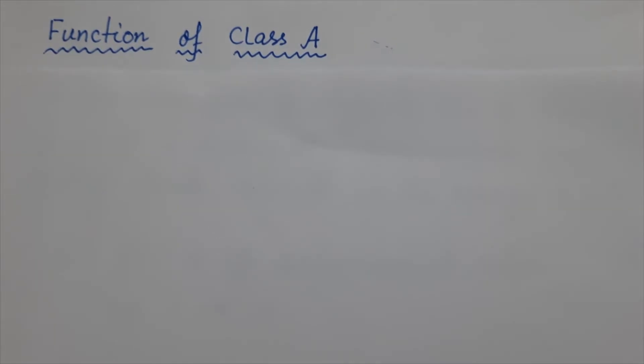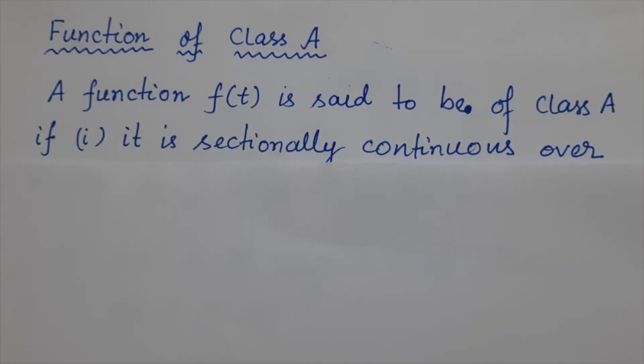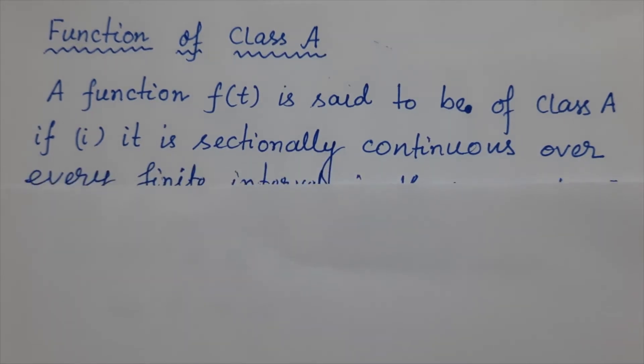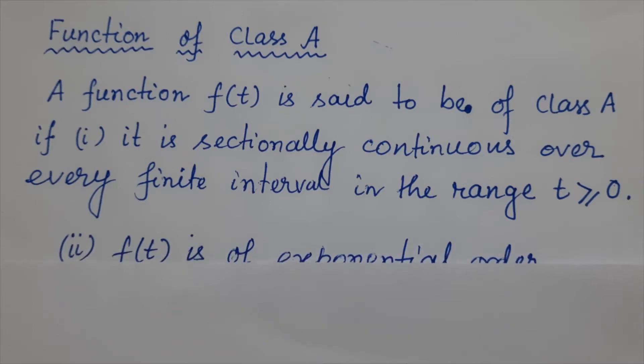Now let's see function of class A. A function f(t) is said to be of class A if: 1. It is sectionally continuous over every finite interval in the range t greater equals to 0. Number 2: f(t) is of exponential order as t tends to infinity.